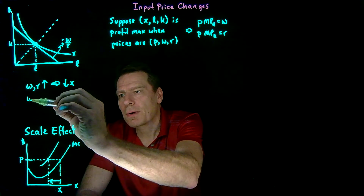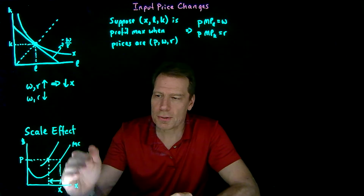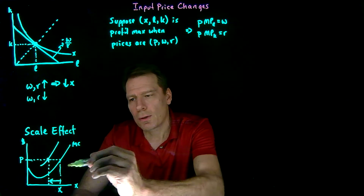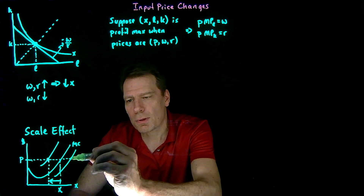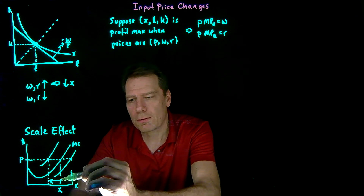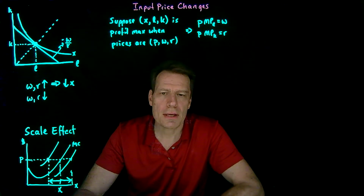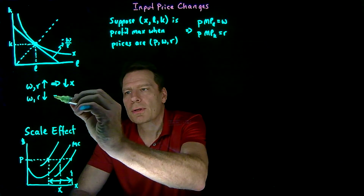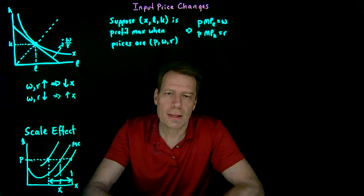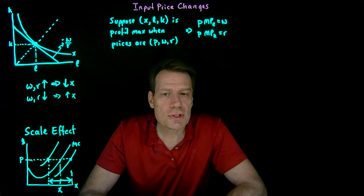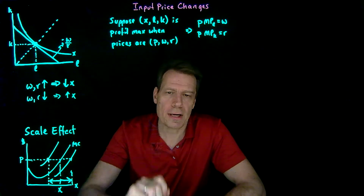What about a decrease in input prices? That's going to do the opposite because it's going to lower marginal costs. When you lower marginal costs, the intersection with price is going to be to the right of where it was. We're going to increase output and scale up, causing an increase in how much we produce. So we'll still have that scale effect that we had when we had changes in output prices.